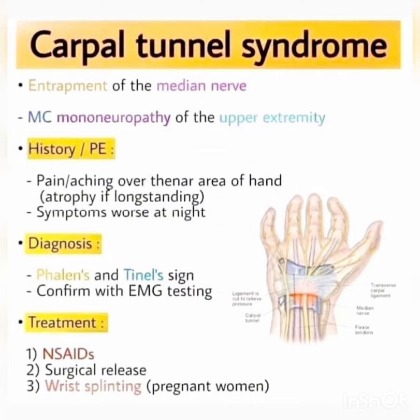Presentation is pain or aching over the thenar area of the hand, atrophy if long-standing, and symptoms worse at night. Diagnosis is by Phalen's sign and Tinel's sign, confirmed with EMG testing. Treatment includes NSAIDs, surgical release, and wrist splinting, especially in pregnant women. Please subscribe and share Dr. Amma's Medicine YouTube channel.